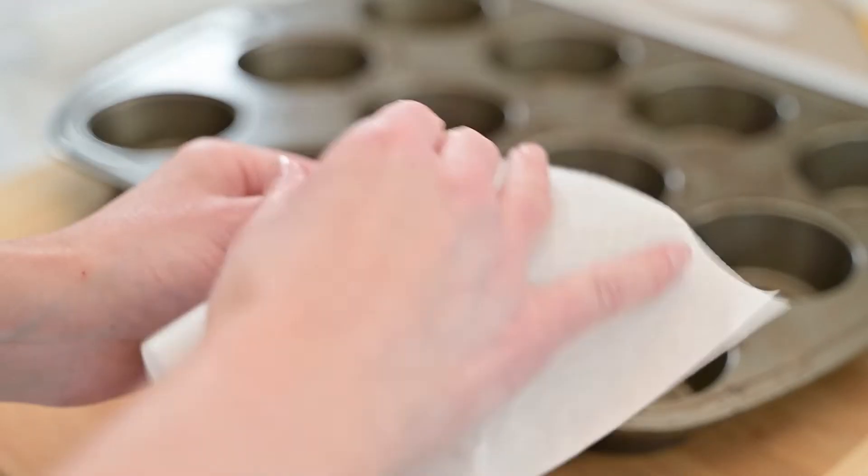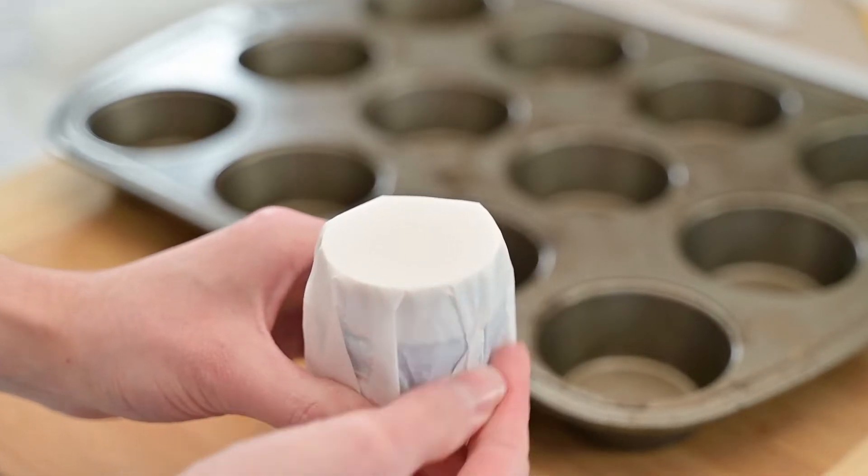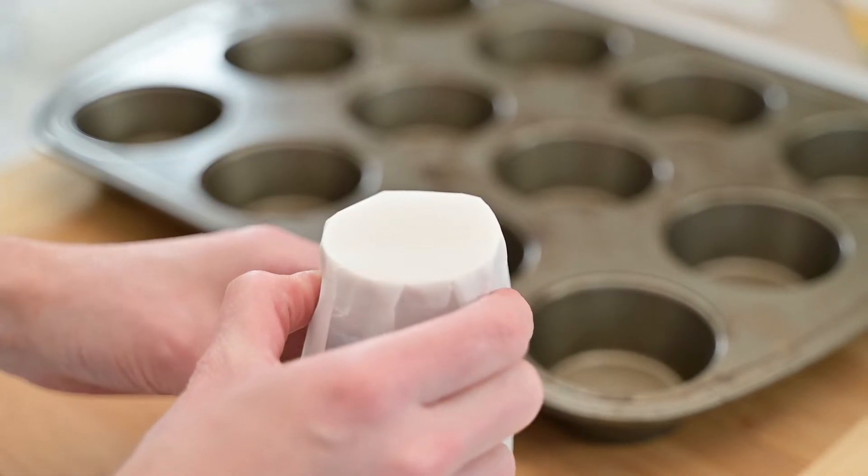Use a small jar or bottle and center the square of parchment paper evenly. Start wrapping the parchment paper around it, pressing any creases onto the jar or bottle to ensure it will hold its shape in the muffin pan.